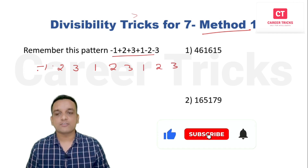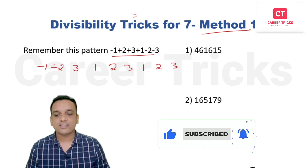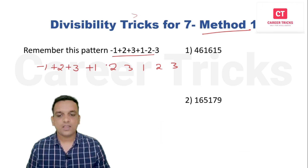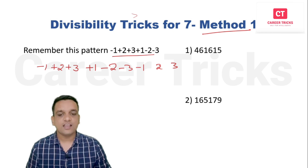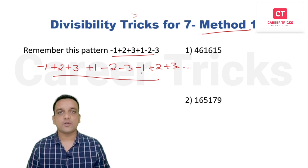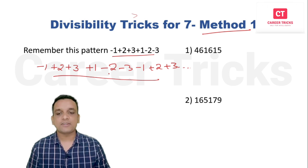The first digit we take as negative sign, the next three digits we take as positive sign, after that the next three digits as negative sign, then the next three as positive. For any number of digits you can easily find out if it is divisible by seven by remembering this pattern.